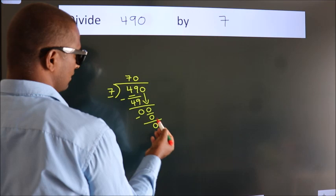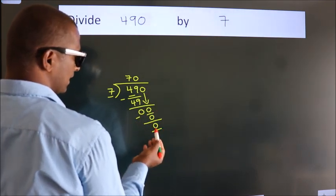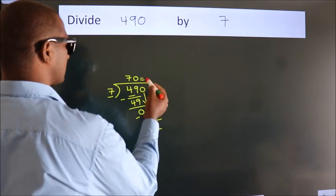After this, no more numbers to bring it down. And we got remainder 0. So this is our quotient.